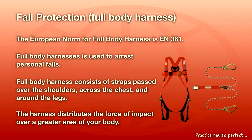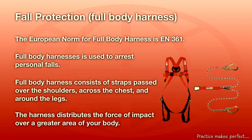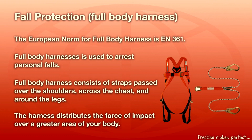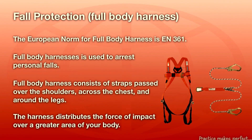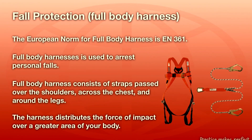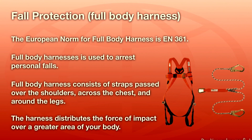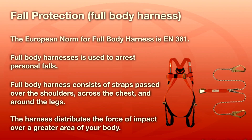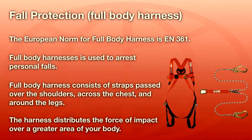The full body harness is fall protection equipment used to protect the wearer from falling from height. A full body harness consists of straps passed over the shoulders, across the chest, and around the legs. The harness distributes the force of impact over a greater area of the body. The anchorage points and inspection of safety harnesses are very important prior to use.